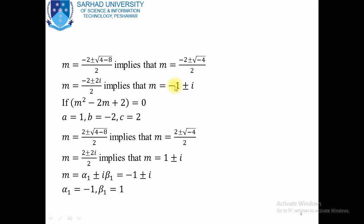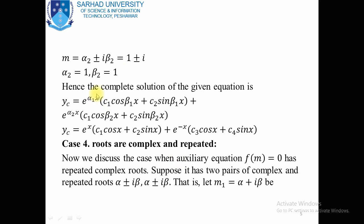These are two complex but different roots — this is called case number 3. The first complex root is alpha1 + iota·beta1 = -1 ± iota·1, so alpha1 = -1 and beta1 = 1. The other complex root is 1 ± iota, so alpha2 = 1 and beta2 = 1. There are two complementary solutions which combine to give the whole complementary solution for the given fourth order homogeneous equation.